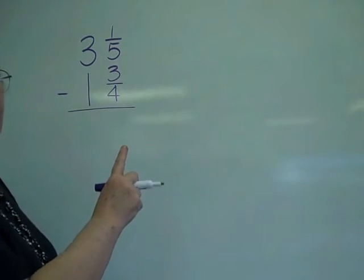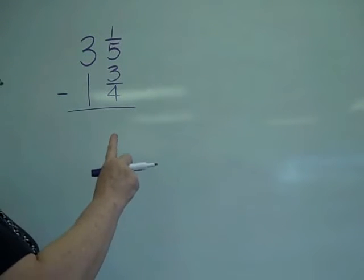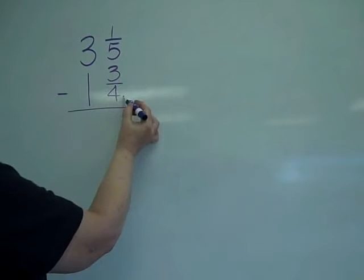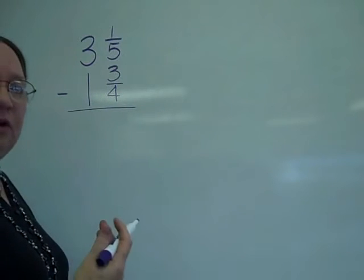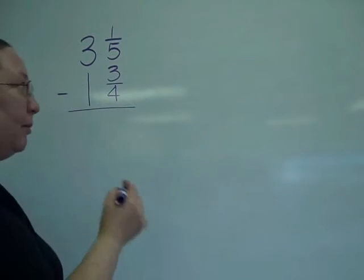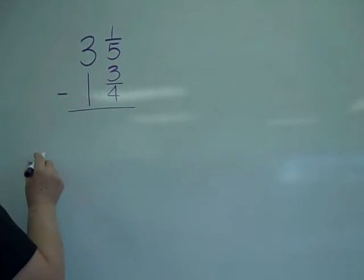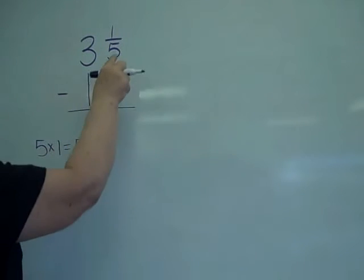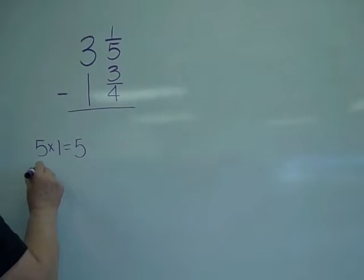First thing you have to do when you have mixed numbers is look just at the fraction part. Looking at the five and the four, we're going to say what do they both go into? Remember, I take the larger of the two and I'm going to say five times one is five. But four does not go into five, so I keep going.